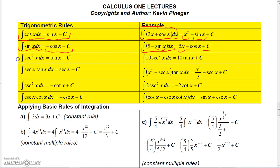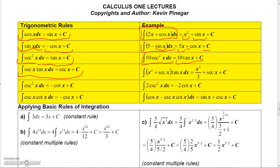We don't yet have rules for integrating secant, tangent, or cotangent directly, but we can use known derivatives. Since secant squared is the derivative of tangent, the integral of secant squared x dx equals tangent x plus a constant. Using the constant multiple rule, the integral of 10 secant squared x dx equals 10 tangent x plus a constant.